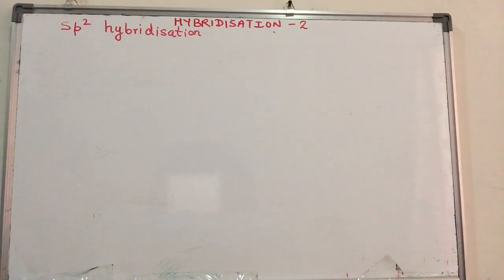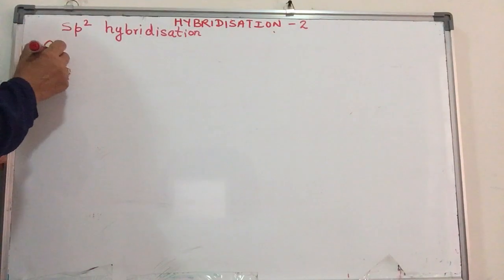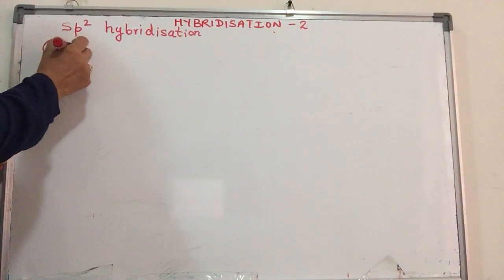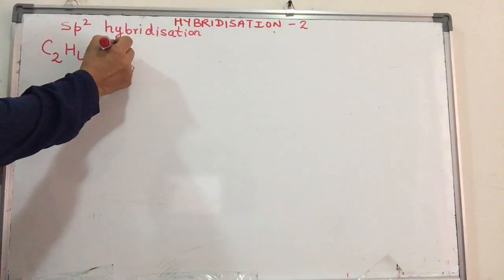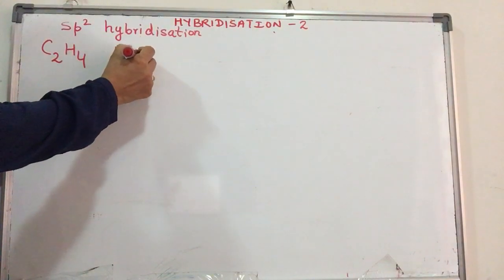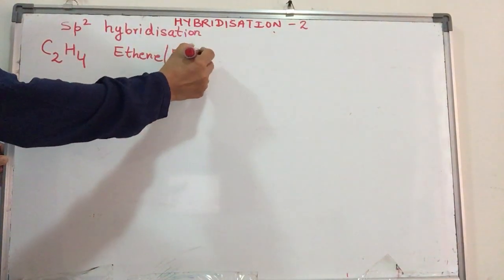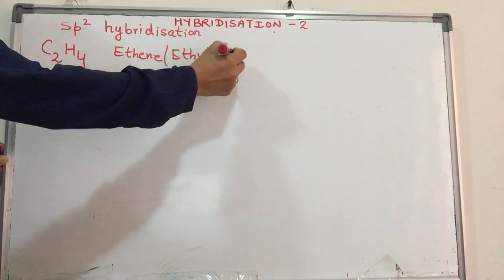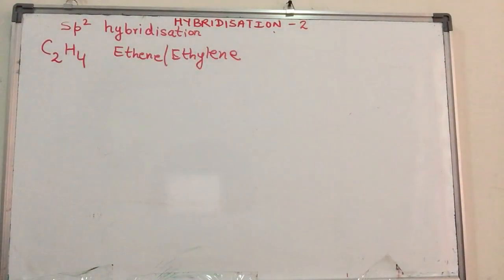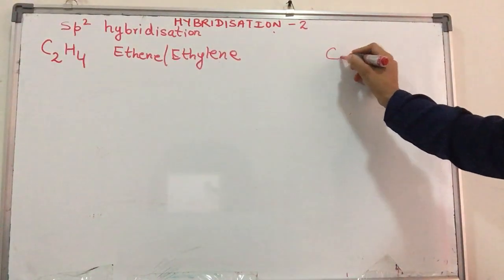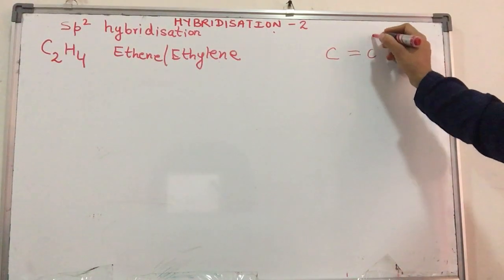What is SP2 hybridization? We shall try and understand it with a very simple example of C2H4 called ethene in the IUPAC system or ethylene. If we draw the bond line notation of ethene or ethylene, what I will understand here is that there is a double bond between the two carbon atoms.